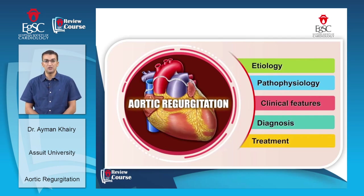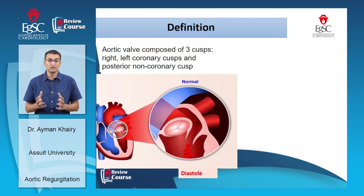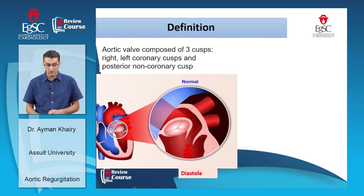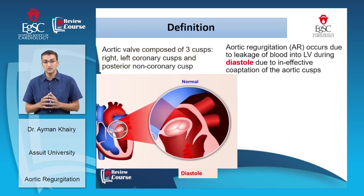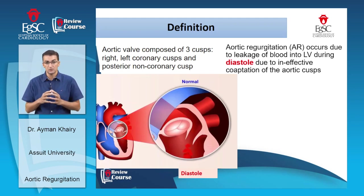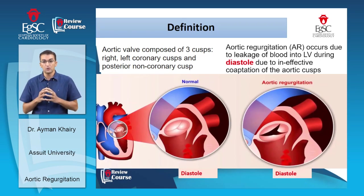First of all, the aortic valve is composed of three cusps: right and left coronary cusps and posterior non-coronary cusp. Its opening and closure depends on the pressure gradient between the left ventricle and the aorta. Once there is aortic regurgitation, there is leakage of blood from the aorta into the left ventricle during diastole due to ineffective closure or coaptation of the aortic cusps.